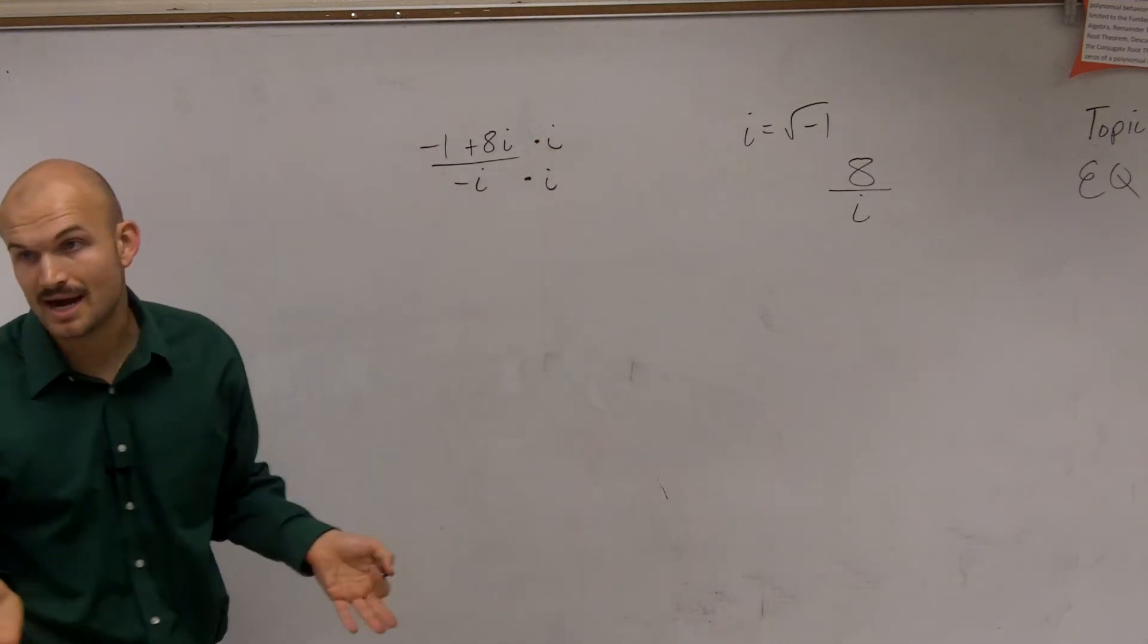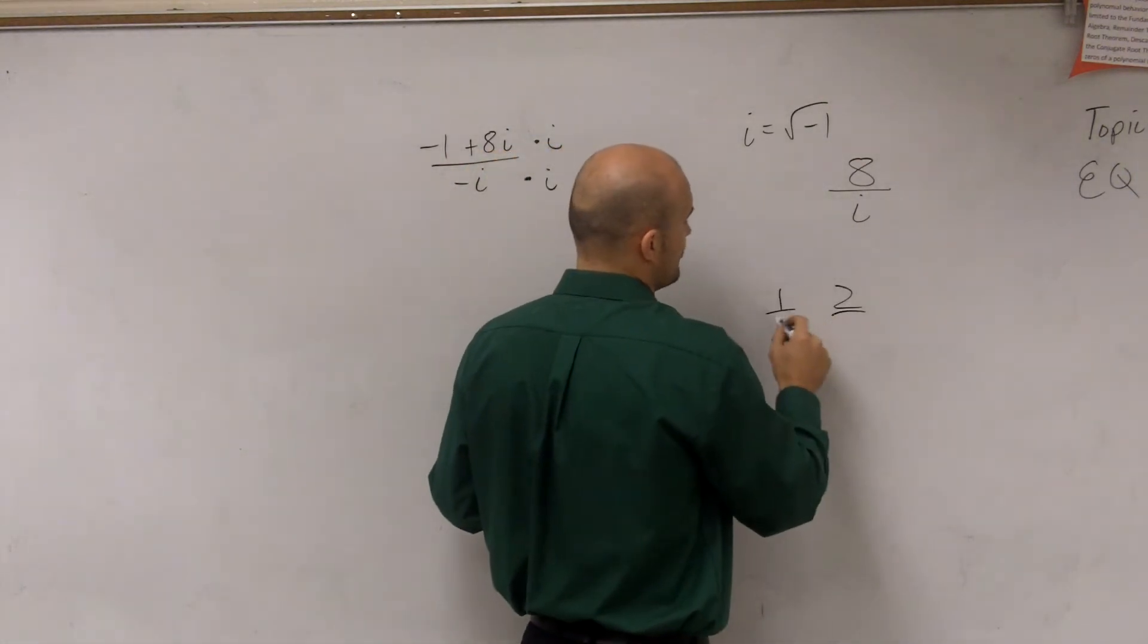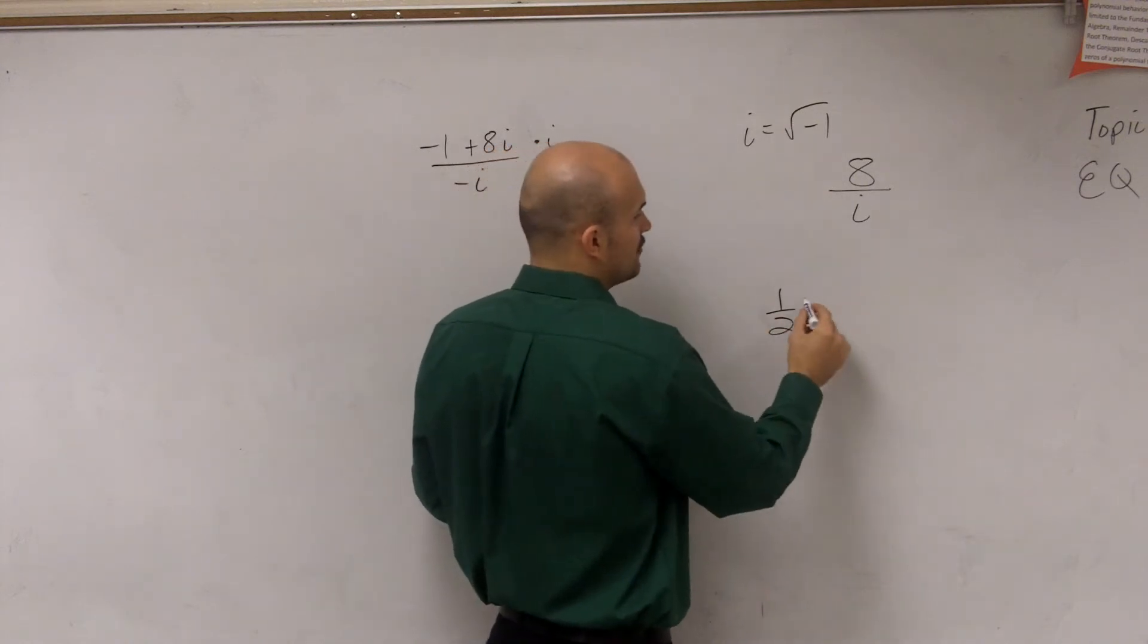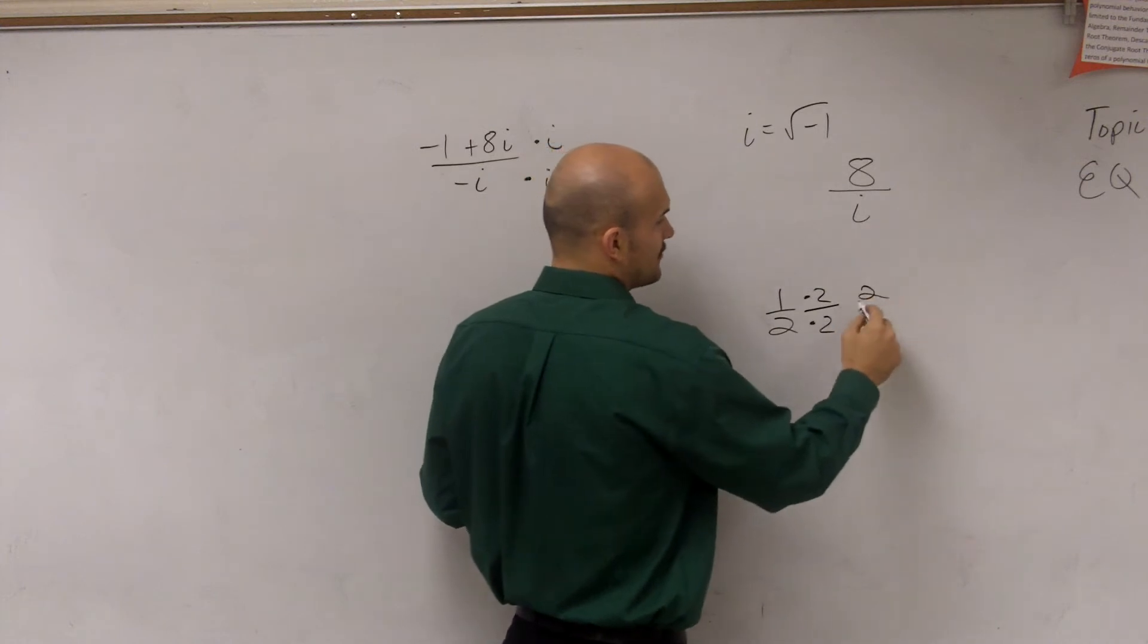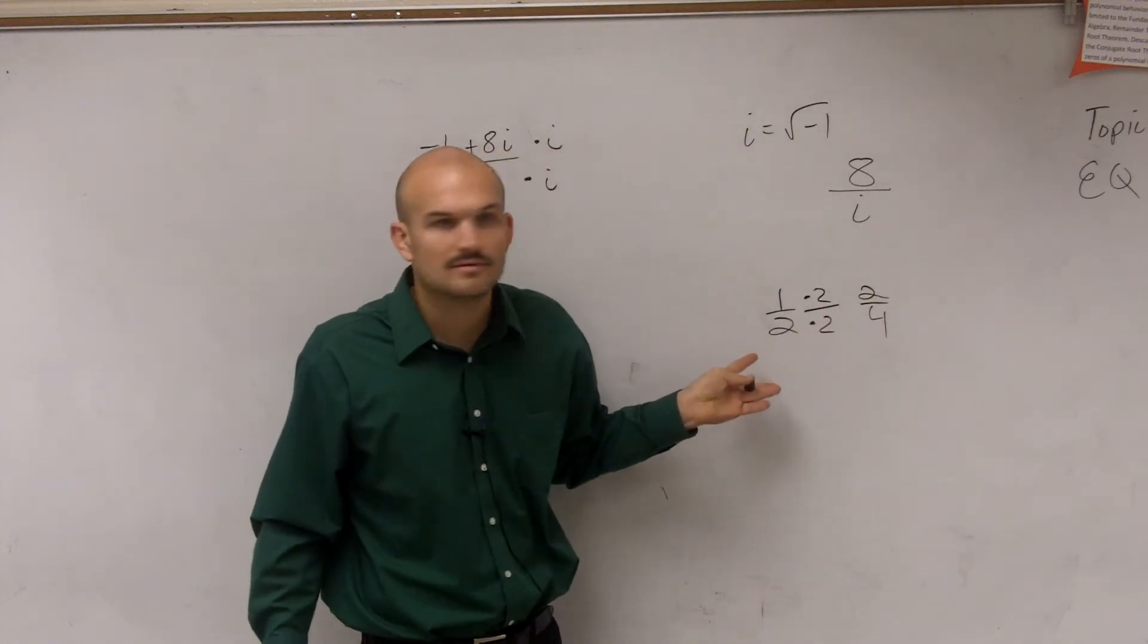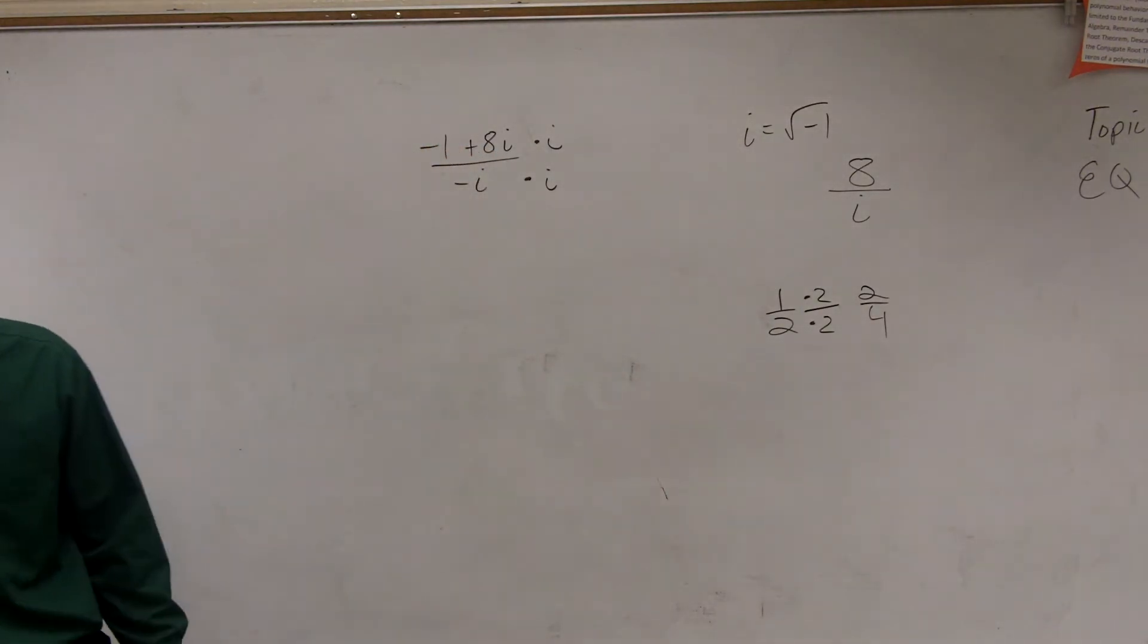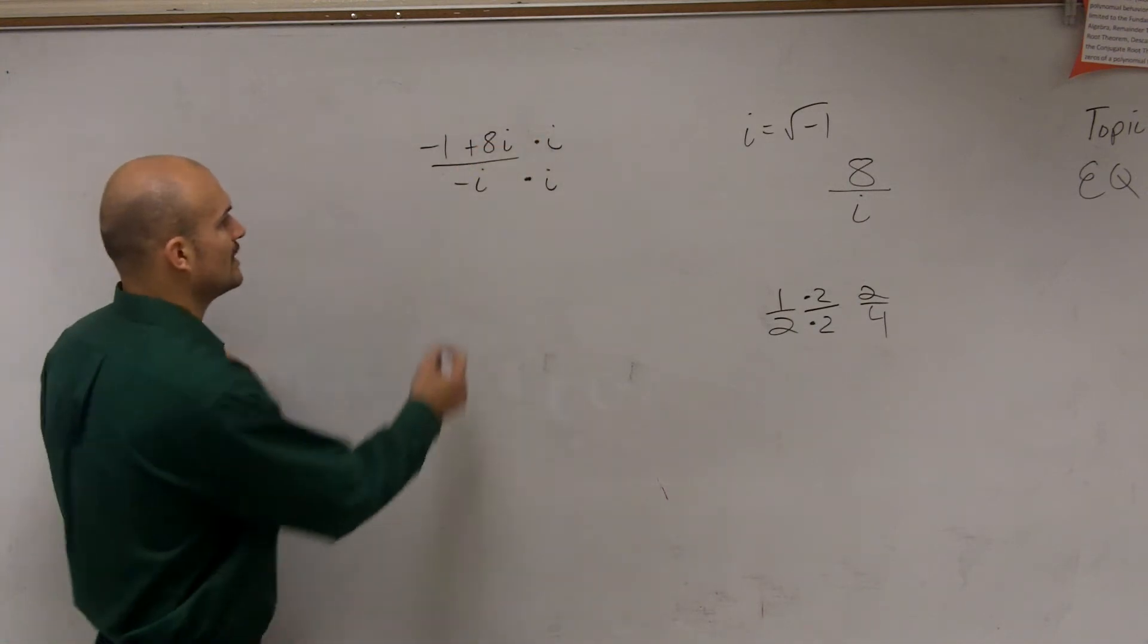Now remember, you can multiply i on the top and the bottom because look at this. What if I did 1 half? If you take the fraction 1 half and then you multiply it by 2 on the top and the bottom, you get 2 over 4. Is 2 over 4 equivalent to 1 half? Yes. So as long as you multiply the same number on the top and the bottom, you're not changing the problem or the fraction. So I'm going to multiply by i over i. Let's see what we get.